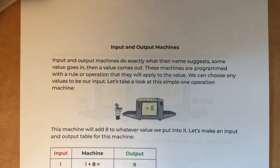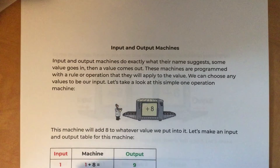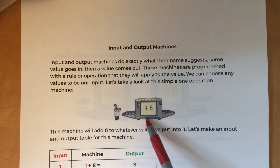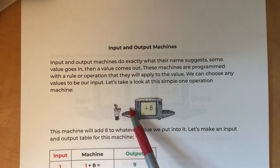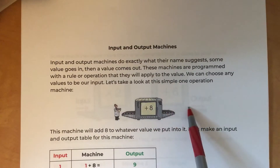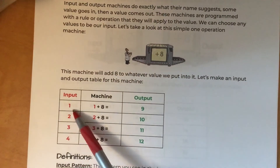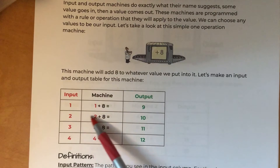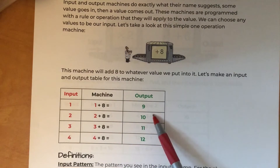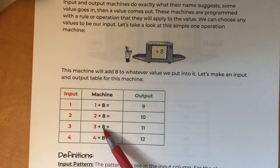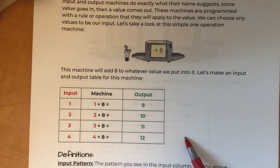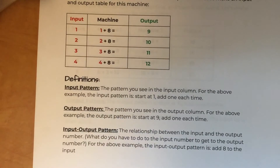Usually when you get to choose your input values, we pick values like one, two, three, four — something easy — because we want to see what the pattern is. For this first example, the input-output machine has a rule of plus eight. So whatever input we put in, it adds eight and spits out the output. If I put a one in, it outputs nine; two goes in, output is ten; three goes in, eleven comes out; four goes in, twelve comes out.